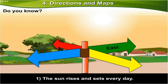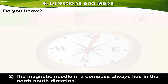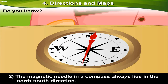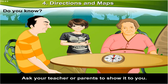The sun rises and sets every day. That is why the sun is used to determine directions. The magnetic needle in a compass always lies in the north-south direction. Ask your teacher or parents to show it to you.